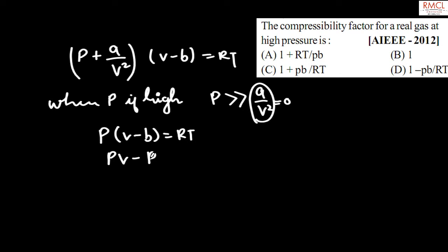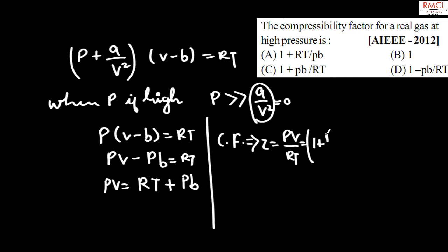So pv = RT + pb. The compressibility factor z is equal to pv/RT, which equals (RT + pb)/RT, which equals 1 + pb/RT. So the correct option for this question is option C.